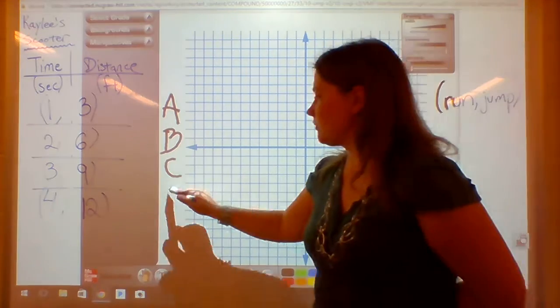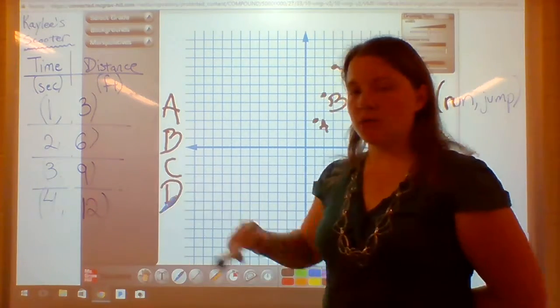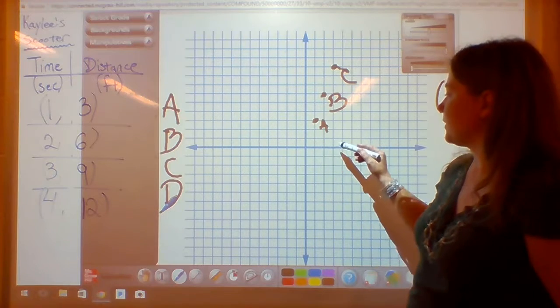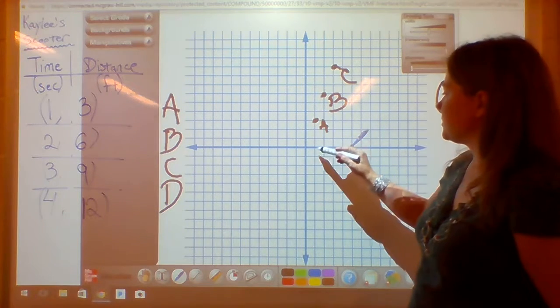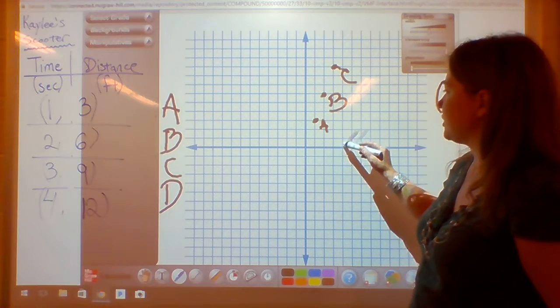And then our last one, point D, is going to be 4, 12. So I'm going to run 4, and I'm going to jump 12.